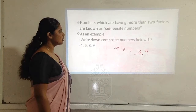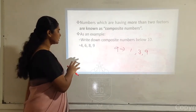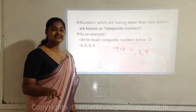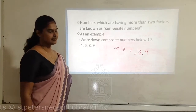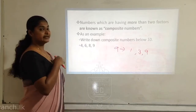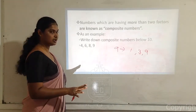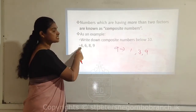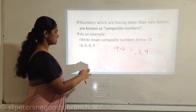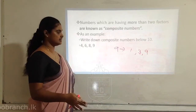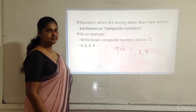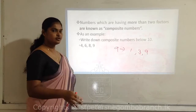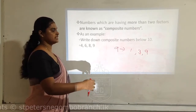Write down composite numbers below 10. Can you consider 1? No — 1 is not either a prime number or a composite number. Two is a prime number. Three is also prime. So four is the first composite number. Then 6, 8, 9, and 10 are composite numbers. What about 11? No, that's prime. Twelve is composite. Fifteen is composite. Likewise it goes on.